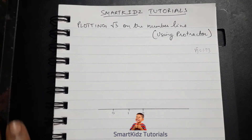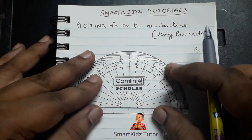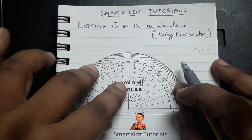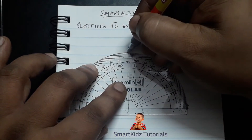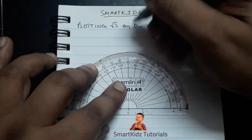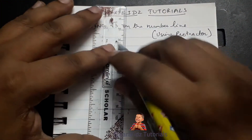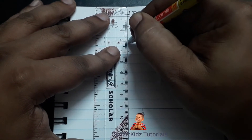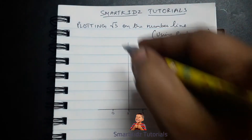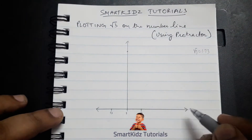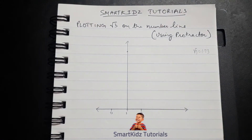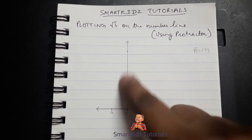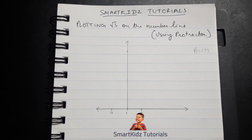I'll keep the point of the protractor over here on 1 and draw a perpendicular, because you have to draw the perpendicular from 1. There we go. Now I'll measure this distance — that is one unit — and cut an arc on this perpendicular line to mark that as one unit as well.